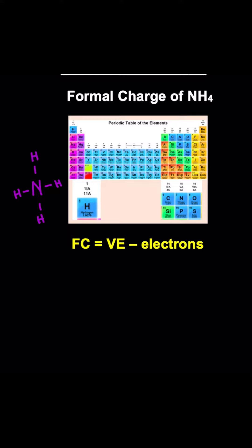How do we calculate a formal charge of NH4? The formal charge can be calculated using this formula, where formal charge equals valence electrons minus the number of electrons around that atom.